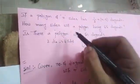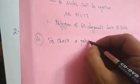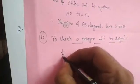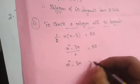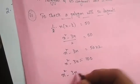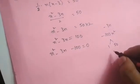Second question: is there a polygon with 50 diagonals? We check by substituting: (1/2) × n × (n-3) = 50, giving n² - 3n = 100, so n² - 3n - 100 = 0. We now look for two numbers that multiply to -100 and add to -3.